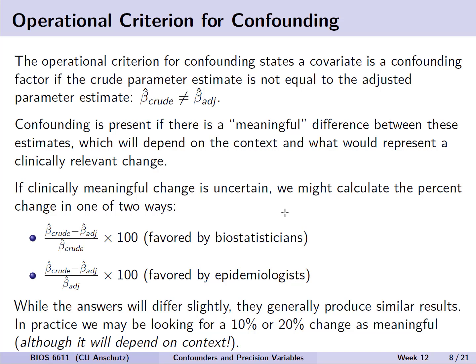In addition to the classical criterion, we have the operational criterion for confounding. We evaluate beta hat crude and beta hat adjusted to determine if confounding is present. If there is a meaningful difference between those two estimates, we say confounding is introduced by that covariate c. We can calculate a percent change in one of two ways: from the biostatistician's perspective, dividing by beta hat crude; or from the epidemiologist's perspective, dividing by beta hat adjusted. Both are completely valid.